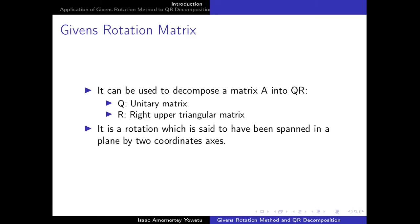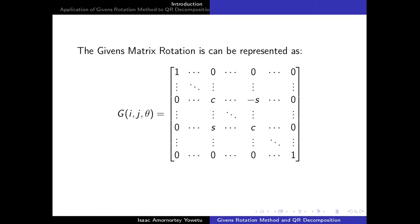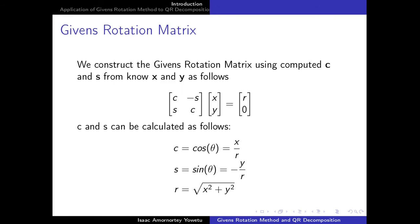This rotation is said to have been obtained by a span of vectors — a span of coordinates in a plane. In general, we can view the Givens rotation matrix as G(i, j, θ), where θ gives us the angle of rotation. To obtain this Givens rotation matrix, we have to compute our C and our S.